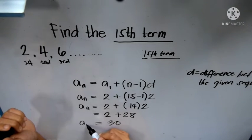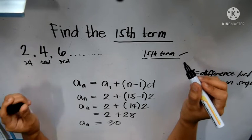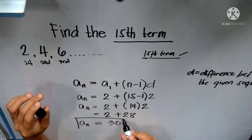So our a sub n, or our 15th term in the 2, 4, 6 sequence, is 30.